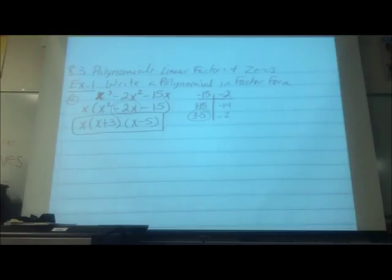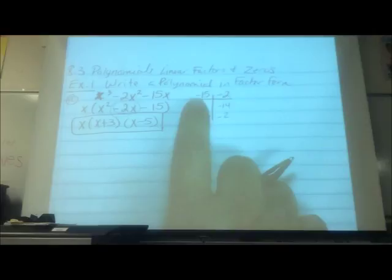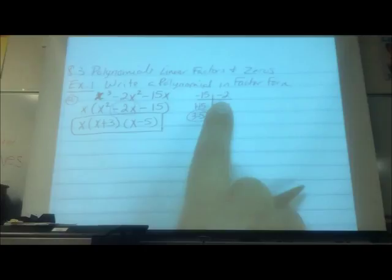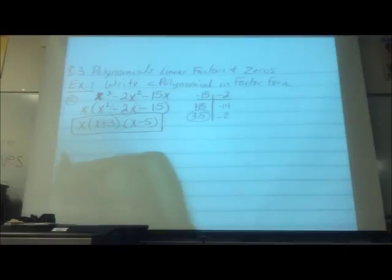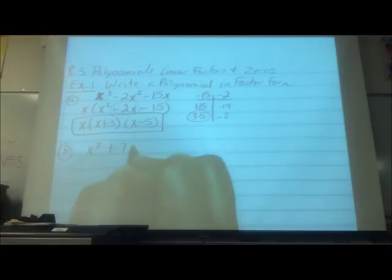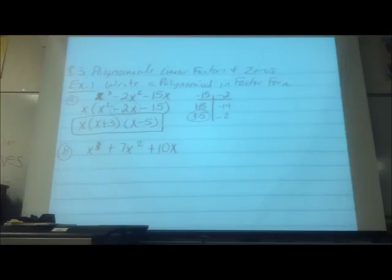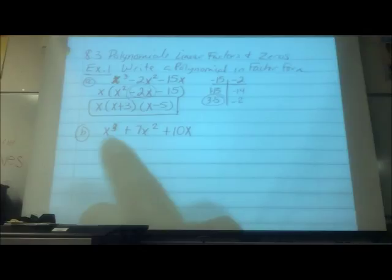Would it just be 5 and 3? Two numbers, it's either 1 and 15 or 3 and 5. Because your middle number was negative, that means your larger number has to be negative. So this would give you a negative 14 and a negative 2. We've done this factoring before, right? So this becomes X, X plus 3, and X minus 5. This here is your final answer.